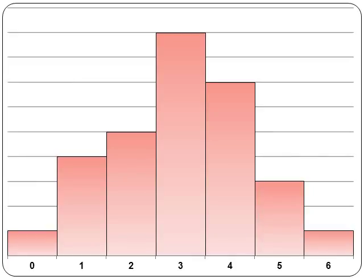A histogram displays data and is a visual means of inspecting the distribution. It can be used to measure central tendency and variability. This is a distribution of the data we just saw — we can see that three is the most common score from a mode perspective, and that scores range from 0 to 6.